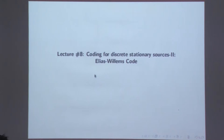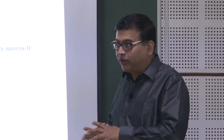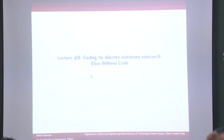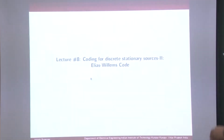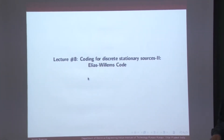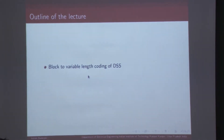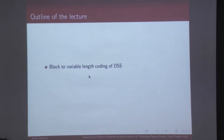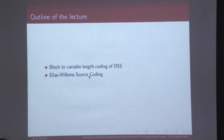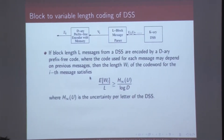We are going to use what we discussed in the previous lecture about coding for positive numbers, and use this in the context of Elias-Williams source coding. We will talk about block-to-variable length coding of discrete stationary source, which is basically this Elias-Williams source coding.